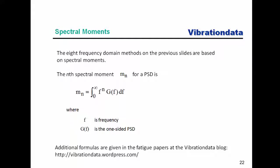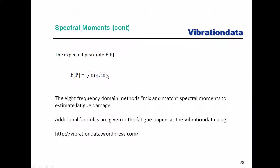The researchers used different combinations of spectral moments along with Rayleigh distributions and other distributions to develop these approximate methods for doing rainflow directly from stress response PSDs. Another key parameter is the expected peak rate EP, equal to the square root of the fourth spectral moment divided by the second spectral moment. The eight frequency-domain methods mix and match these spectral moments. More information is available on my vibration data blog.